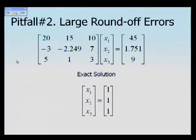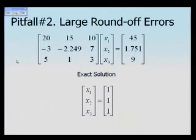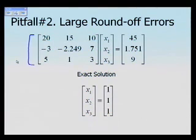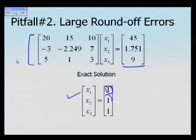Now let's look at the second pitfall. Even if you avoid division by zero, division by a very small number can also create problems, which leads us to pitfall number two: large round-off errors. As an example, we have a coefficient matrix and a right-hand side vector whose exact solution is x1 = 1, x2 = 1, x3 = 1. You can verify this by plugging those values into the equations to exactly recover the right-hand side.